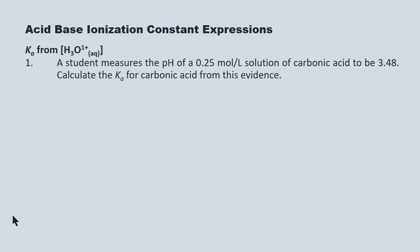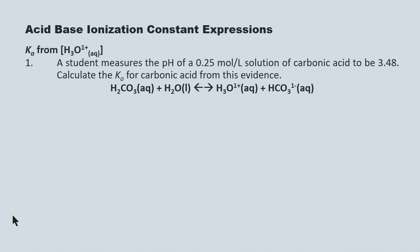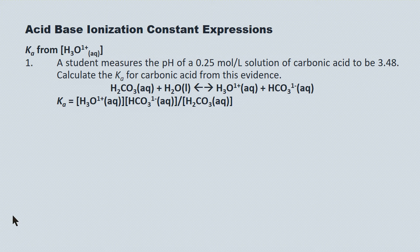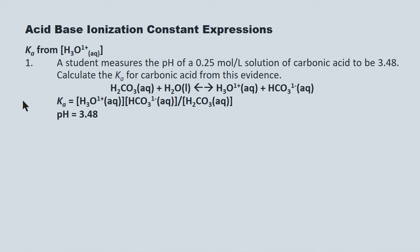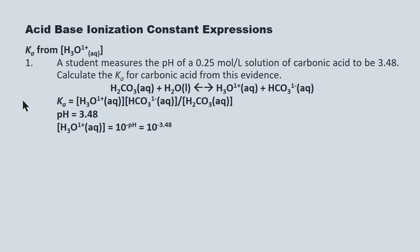Here's an example: a student measures the pH of a 0.25 mol/L solution of carbonic acid to be 3.48. Calculate the Ka for carbonic acid from this evidence. Carbonic acid reacts with water to produce hydronium and the hydrogen carbonate ion. The Ka expression equals concentration of the products divided by concentration of the reactants, and the exponents are all 1. We use the pH to determine the concentration of hydronium: [H3O+] = 10^(−pH) = 10^(−3.48), giving us the hydronium ion concentration.